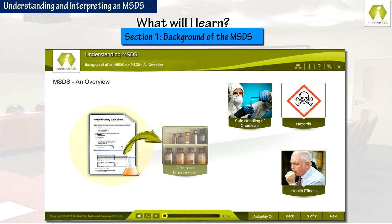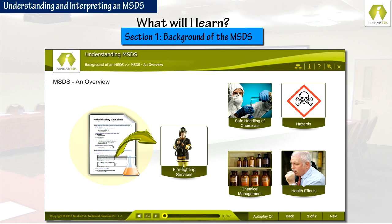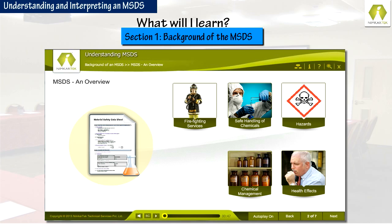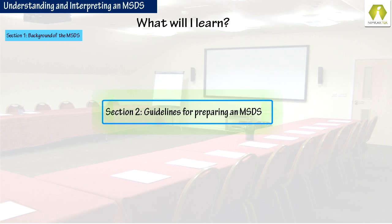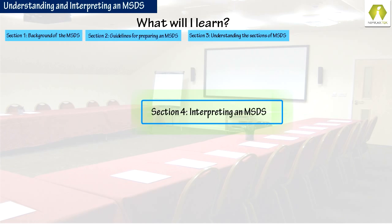Additionally, it also acts as a key reference document for chemical management at the workplace. MSDS is also a document for reference by emergency service providers, such as firefighting services, to ascertain the instructions for handling emergencies caused by the chemical. MSDS documents are used for transport labeling and shipping requirements of the chemical. Section 2 discusses the different guidelines for preparing an MSDS document, including GHS and EU CLP. Section 3 describes the 16 sections of the MSDS document. Section 4 will help you interpret the MSDS for better chemical management implementation at your facility.